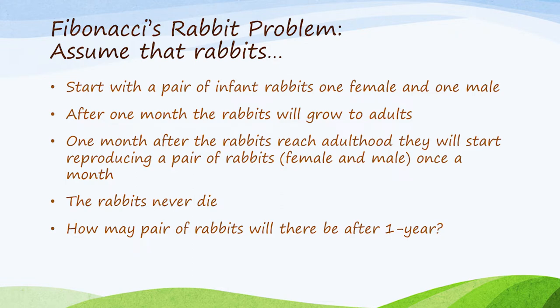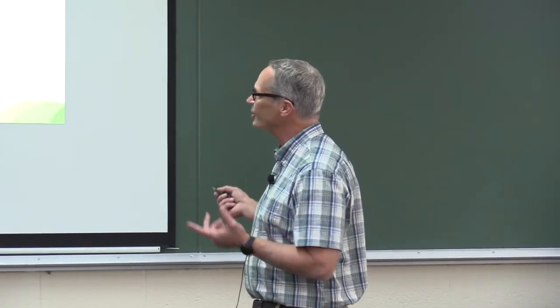They start as little baby rabbits. After one month, the rabbits will grow to adults. A month after they become adults, they begin to reproduce, and they always reproduce a pair of rabbits — one male and one female. Once they start reproducing, they reproduce every month after that. The rabbits never die — they just keep on living and living. His question was: how many pairs of rabbits will there be after one year?